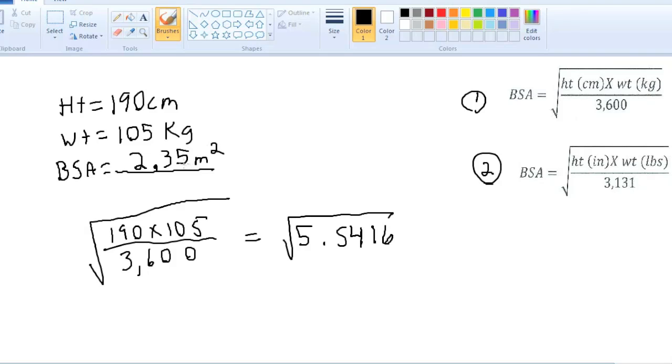Again, you never press that square root button yet. So, once you press that square root button, you should get a BSA of 2.35 meters squared. Again, make sure you round it to the second place, which is the hundredths. Make sure you round it.